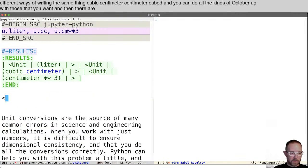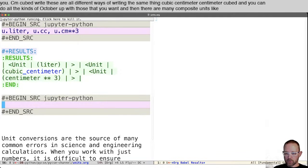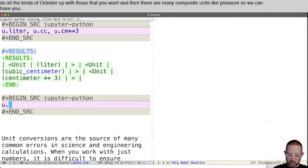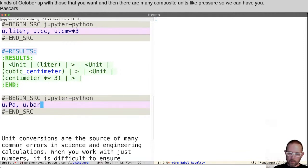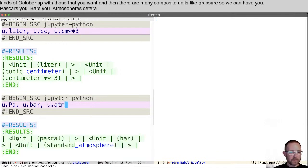And then there are many composite units like pressure. So we could have u dot pascals, u dot bars, u dot atmospheres, et cetera. And these are all composite SI units that are comprised of those other ones.